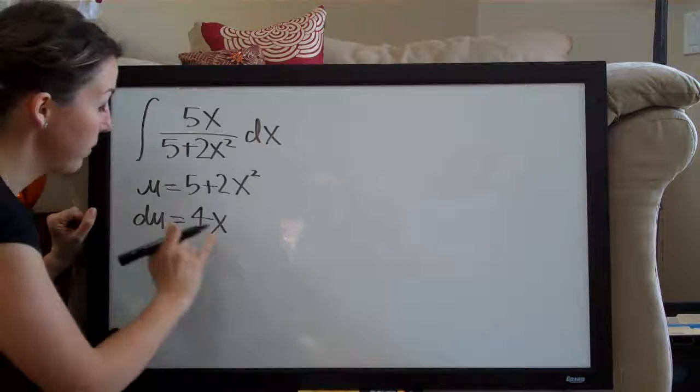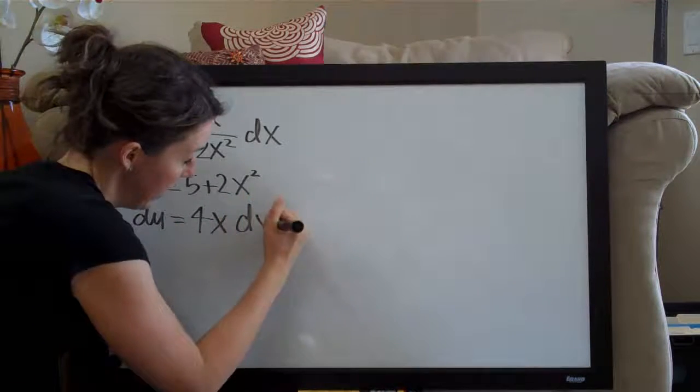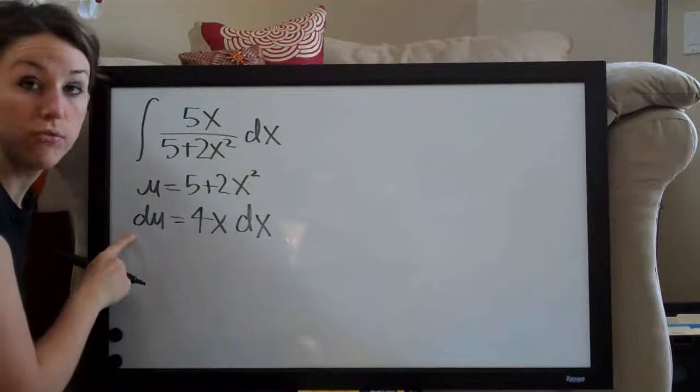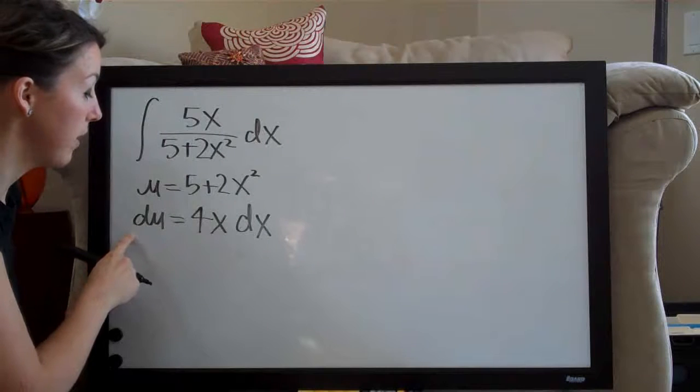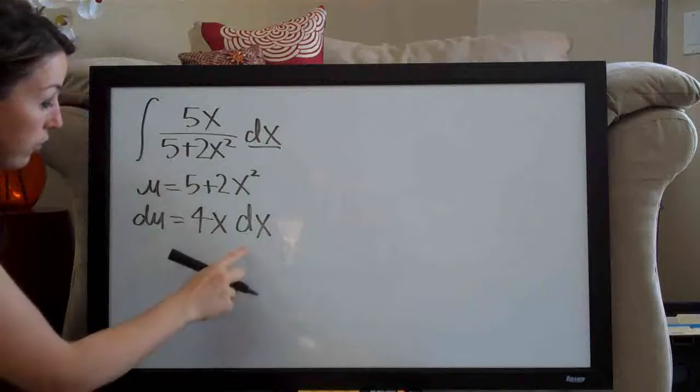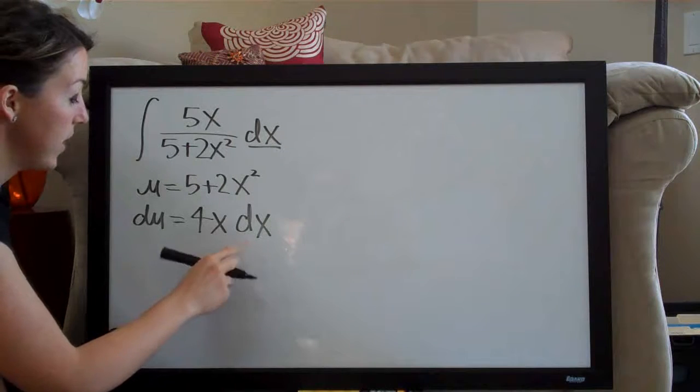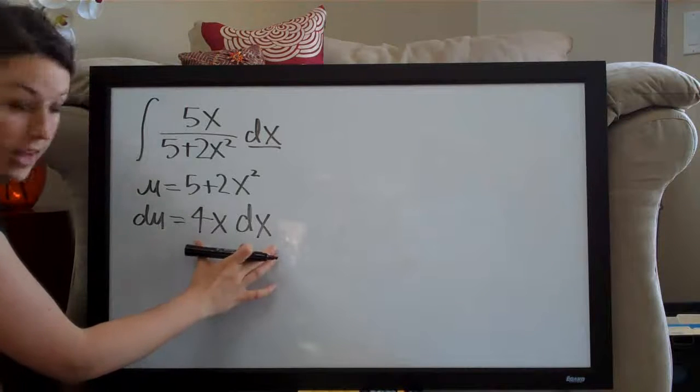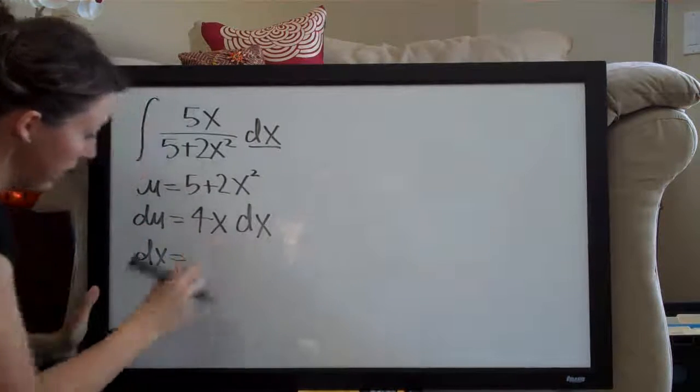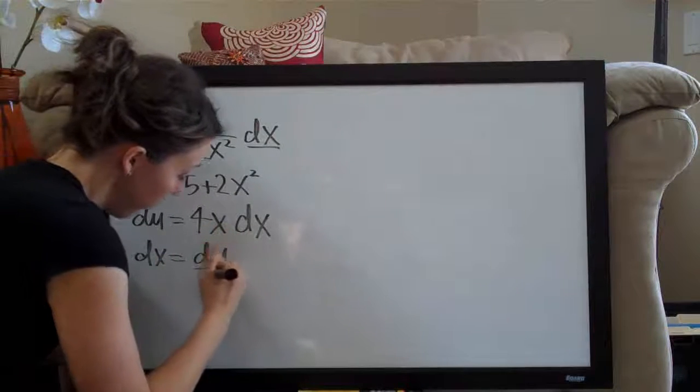Now that we've taken the derivative, remember to add dx because we have to solve this equation for dx so that we can plug our answer back in for this dx up here. We're going to go ahead and solve for dx by dividing both sides by 4x. So, it will cancel on this side and we'll end up with dx equals du over 4x.